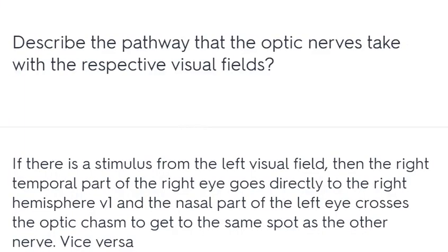Describe the pathway that the optic nerves take with the respective visual fields. If there is a stimulus from the left visual field, the temporal part of the right eye goes directly to the right hemisphere V1, and the nasal part of the left eye crosses the optic chiasm to get to the same spot. Vice versa for the other side.